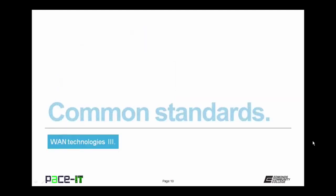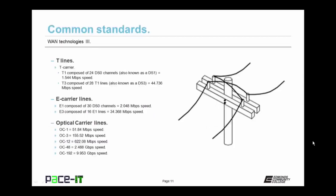Let's conclude with common standards — specifically the speeds. A T1 is composed of 24 DS0 channels, also known as a DS1, capable of achieving speeds of up to 1.544 megabits per second. You can also lease a T3 line — composed of 28 T1 lines, also known as a DS3 — which can achieve speeds of up to 44.736 megabits per second. If you're in Europe, you might lease an E1 line, composed of 30 DS0 channels, which can achieve speeds of up to 2.048 megabits per second.